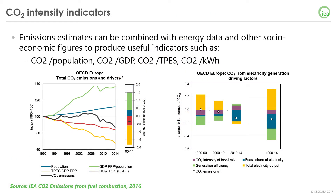Emissions estimates can be combined with energy data and other socio-economic figures to produce useful indicators. Here we can see two examples of decomposition analysis of CO2 trends, both showing the OECD Europe region. On the left, you can see the CAIA identity, which decomposes the trend in CO2 emissions into trends in population, GDP per capita, change in the energy intensity of the economy, and carbon intensity of the energy mix. On the right, there is another decomposition, this time of emissions due to electricity only.